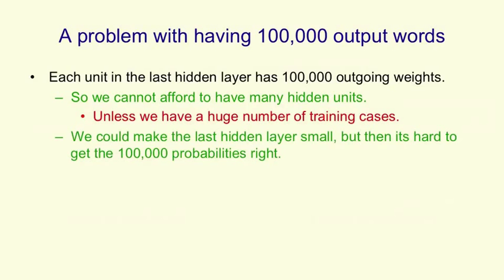We could try and make the last hidden layer small so we don't need too many weights. But then we have the problem that we have to get the 100,000 probabilities of the various words that might come next fairly accurately right. It's not just the big probabilities we need. A very large number of words will have small probabilities. And the small probabilities are often relevant. It might be that the speech recognizer has to decide whether it's two different rare words. And then it's very relevant which of those is more common in the context, even though both of them are pretty unlikely.